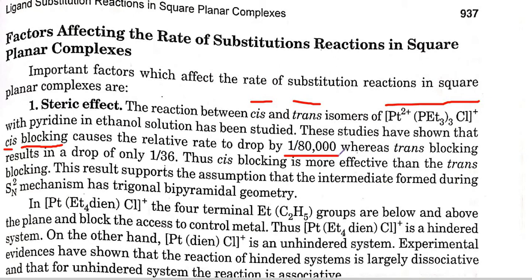The cis isomer causes the relative rate to drop by 1 over 80,000. Whereas trans blocking results in a drop of only 1 over 36. This means that cis-blocking is more effective, because trans blocking is not as effective.